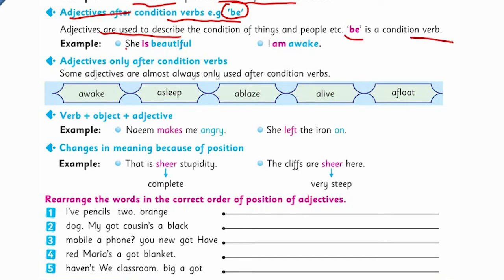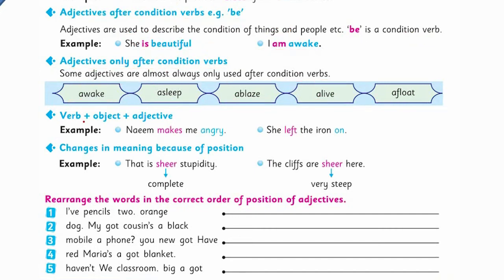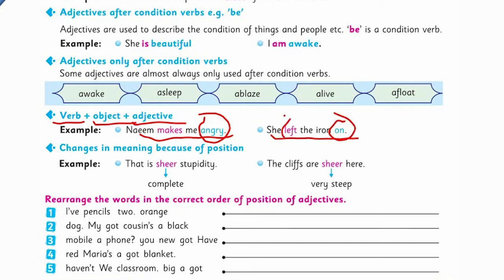For example: 'She is beautiful' and 'I am awake' — like being something or being in a situation. Some adjectives are almost always only used after condition verbs: awake, asleep, ablaze, alive, afloat. Verb plus object plus adjective — for example, 'It makes me angry' or 'She left the iron on.' Here 'angry' and 'on' are your adjectives, and 'make' and 'left' are your verbs.